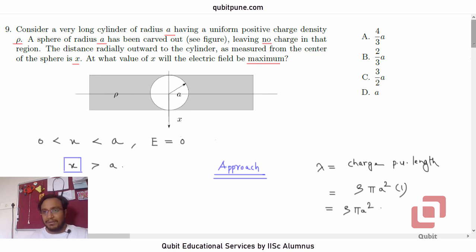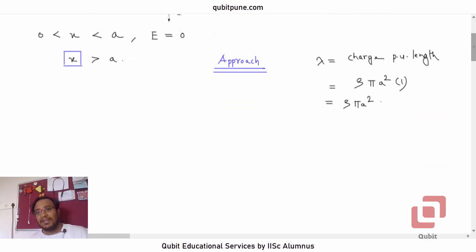We have derived the expression for the electric field due to uniform line charge in our first chapter of 12 standard physics. So what will be E1? E1 will be equal to lambda by 2 pi r epsilon naught, which will be rho pi A squared upon 2 pi x epsilon naught.